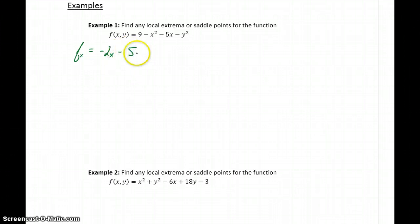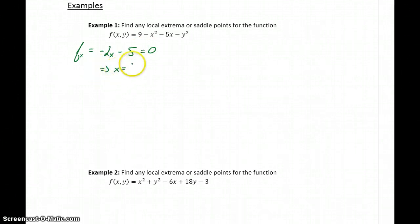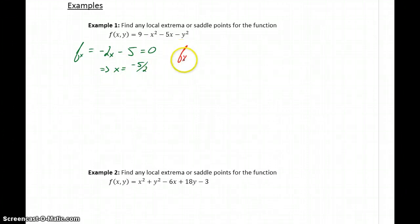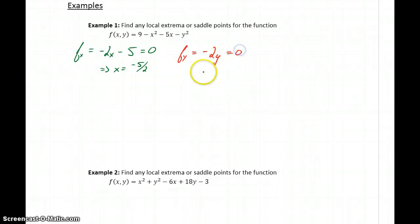We take that first derivative with respect to x and set it equal to 0 to solve for x, and in this case we get x equals negative 5 halves. Then we do exactly the same thing but start with the first partial derivative with respect to y, which in this case will be negative 2y. Setting that equal to 0 gives us y equals 0.